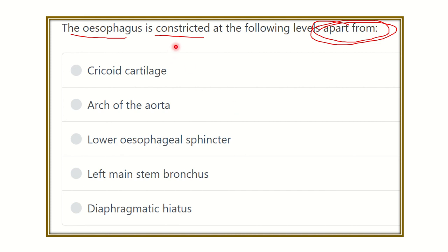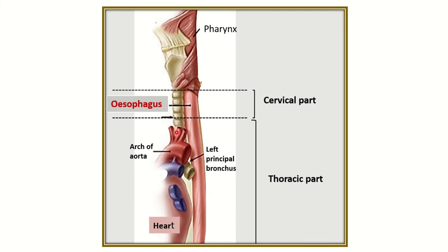First we need to know where the constrictions of the esophagus are present, and once we identify those points it will be easy to find where constriction is NOT present. The esophagus starts from the pharyngoesophageal junction and descends down, passing the diaphragm and ending at the stomach. Along its pathway, different structures are present, including the arch of the aorta and the left main bronchus.